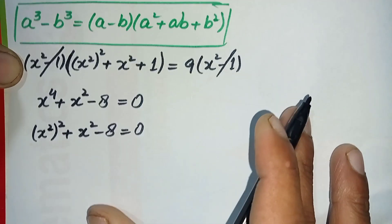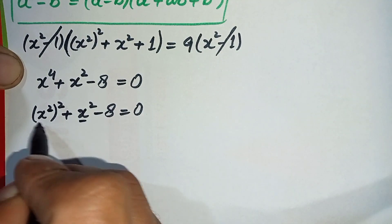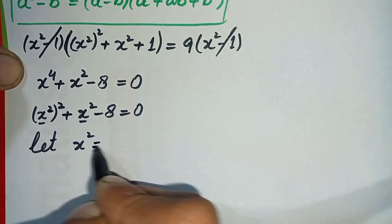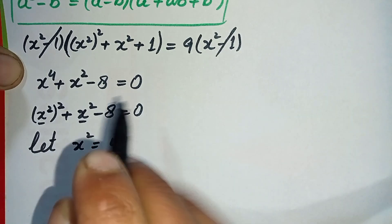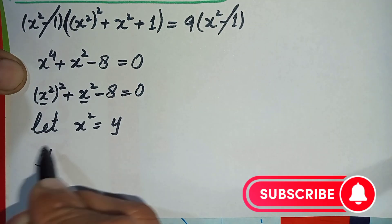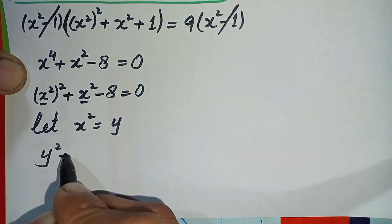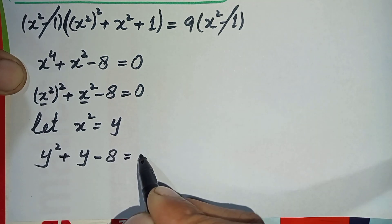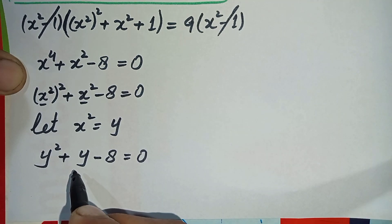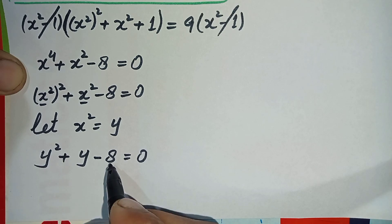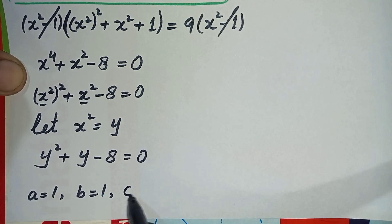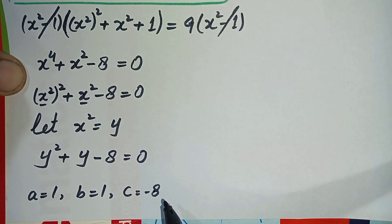Now let us replace x squared with y. So let x squared equal y. The equation becomes y squared plus y minus 8 equals 0. We will use the quadratic formula to find the roots, where a equals 1, b equals 1, and c equals negative 8.